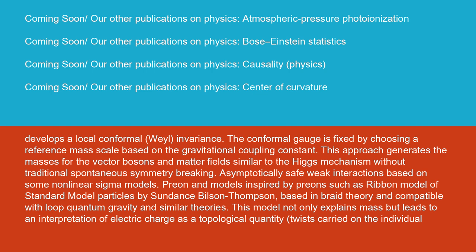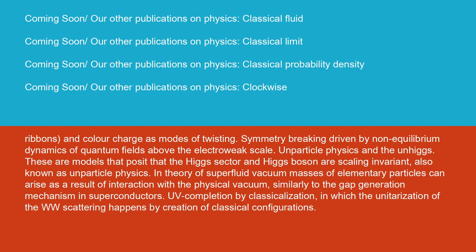This model not only explains mass, but leads to an interpretation of electric charge as a topological quantity, twists carried on the individual ribbons, and color charge as modes of twisting.